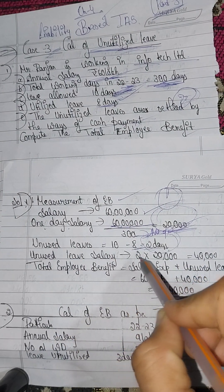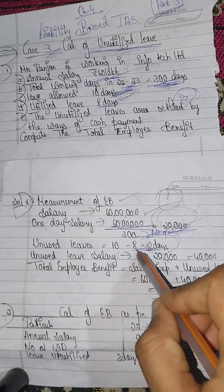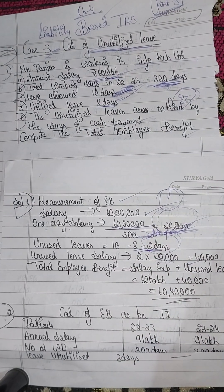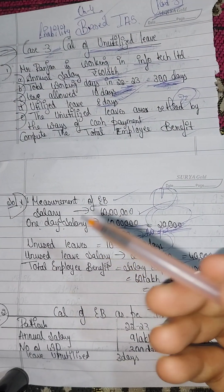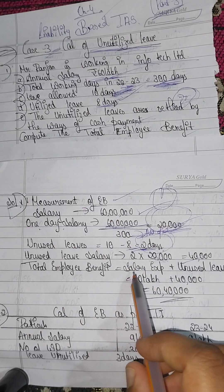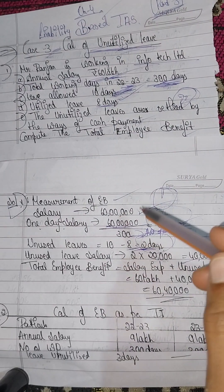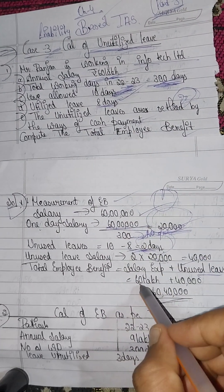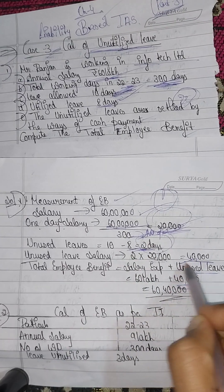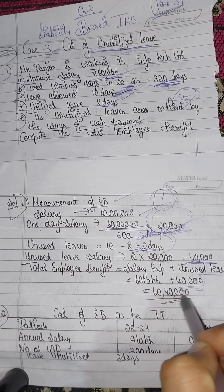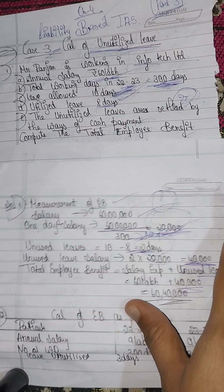The unutilized leave salary is equal to 20,000 multiplied by 2 days, which is 40,000 rupees. Total employee benefit equals total salary expenses plus unutilized leave salary. Annual salary is 60,00,000 plus unutilized leave salary of 40,000, which equals 60,40,000 rupees.